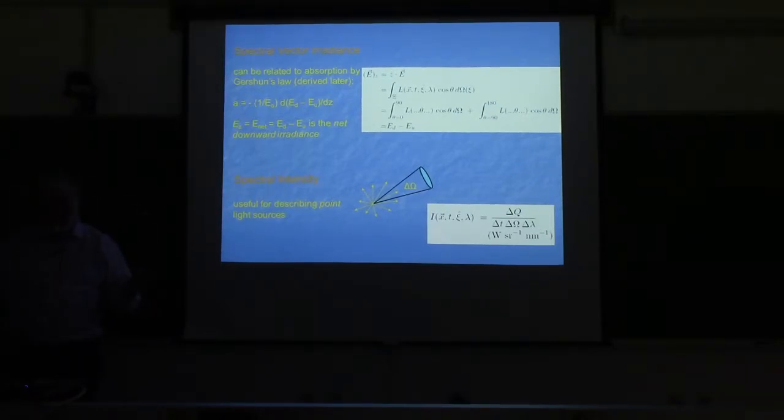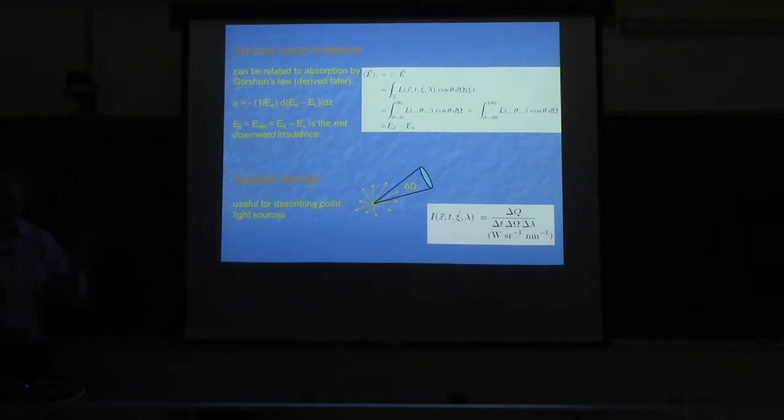If in a paper you say I measured whatever and the intensity was, and there's a plot with units of watts per square meter per nanometer, that's not an intensity, that's an irradiance.